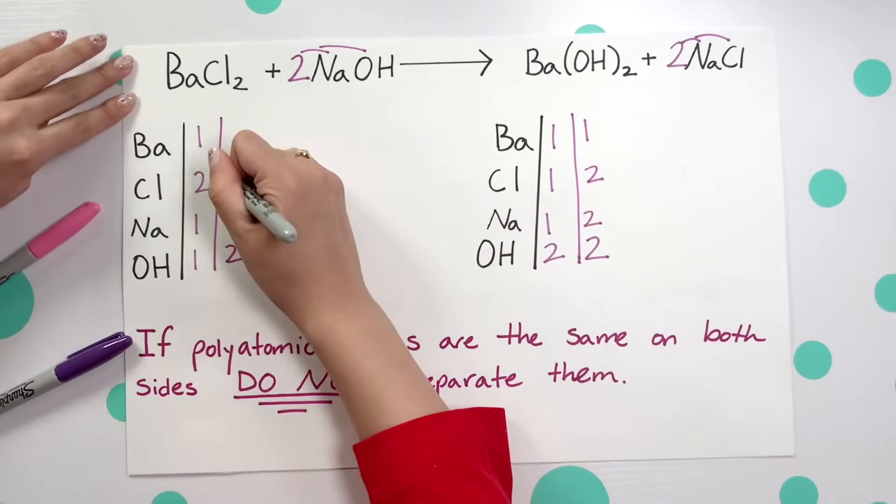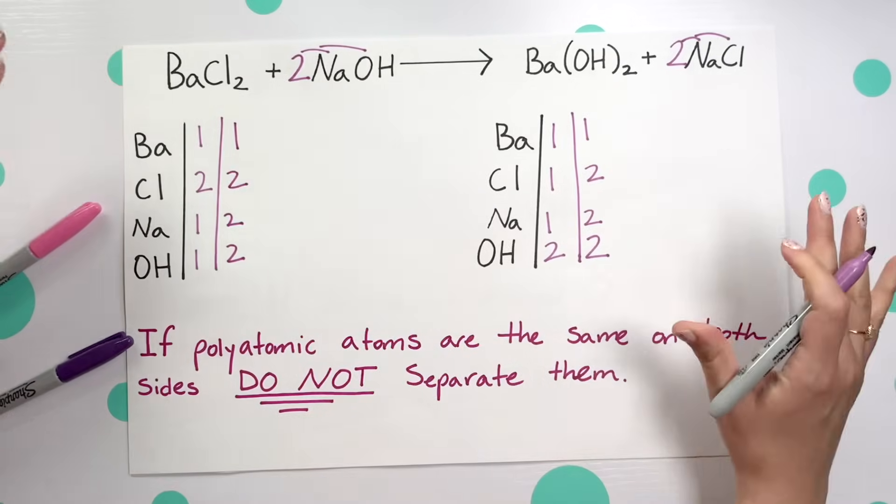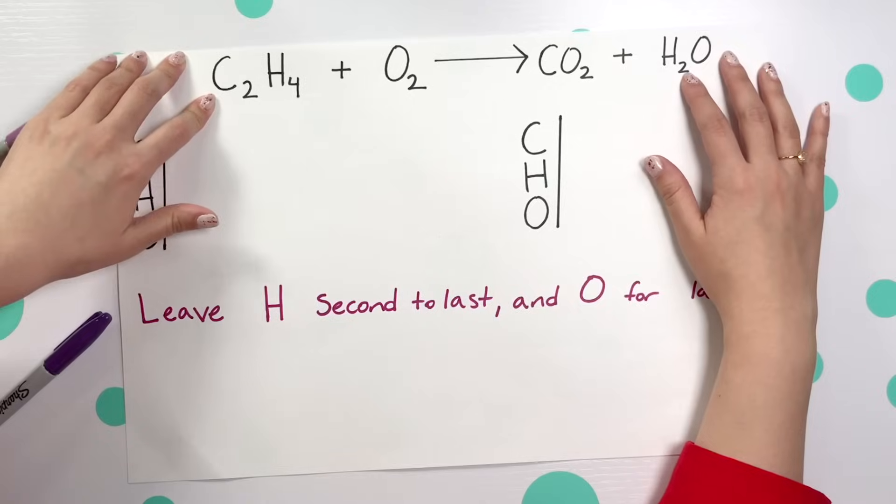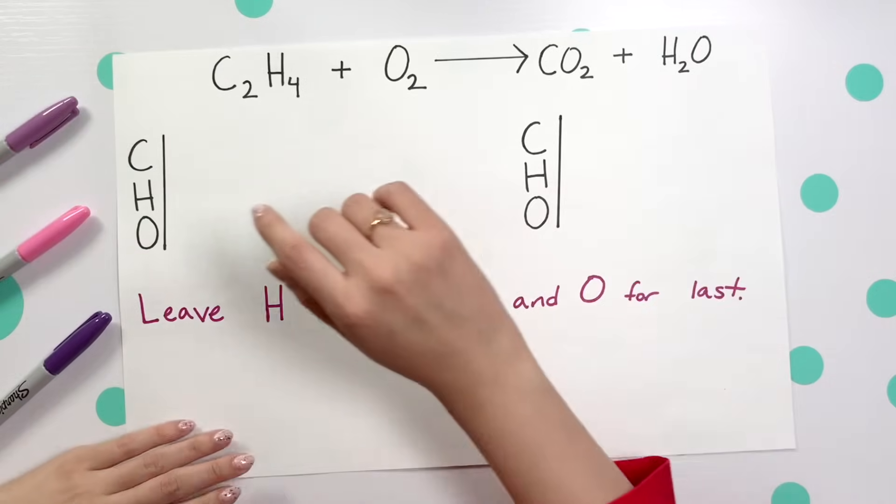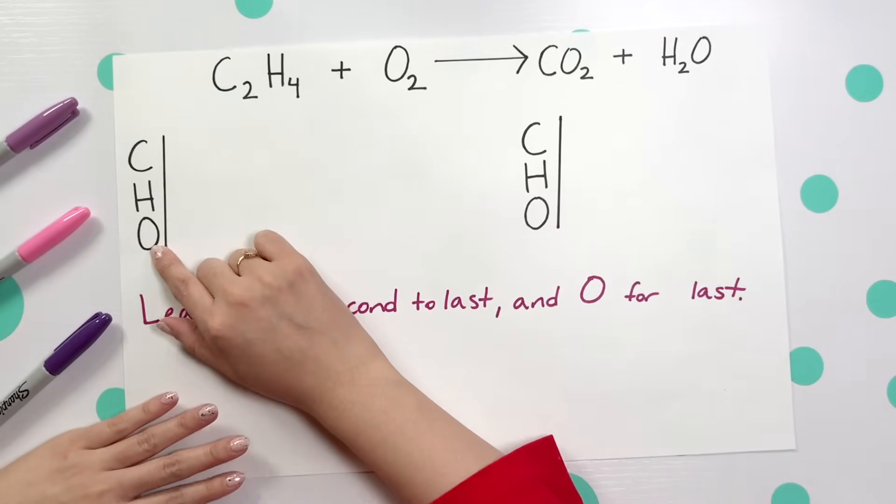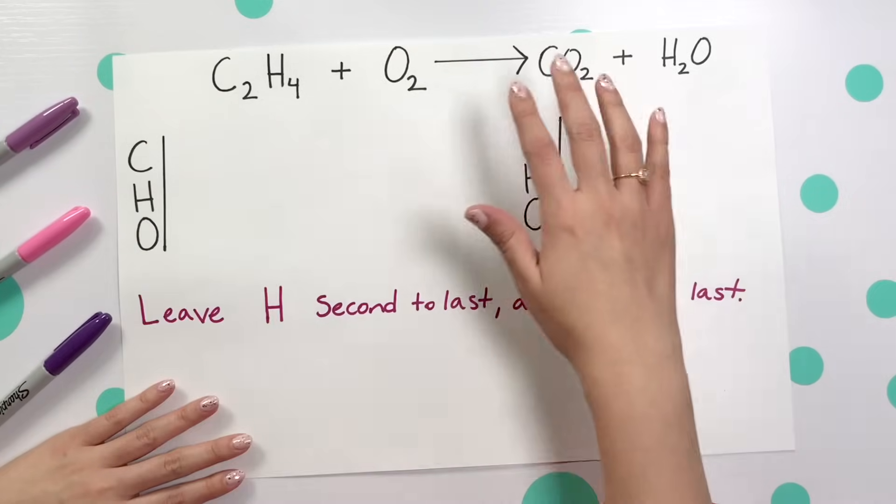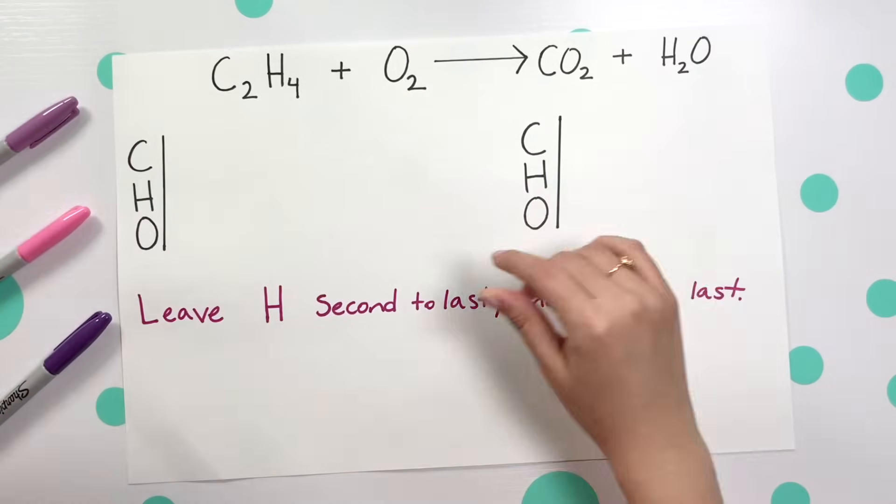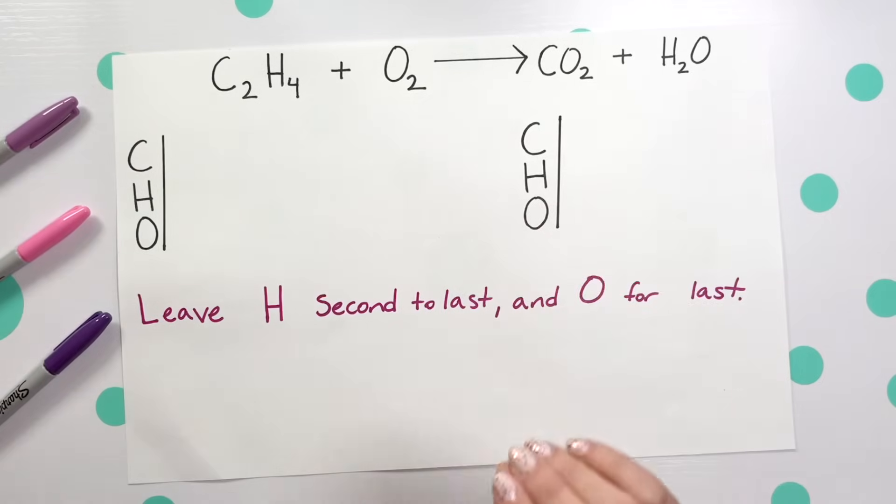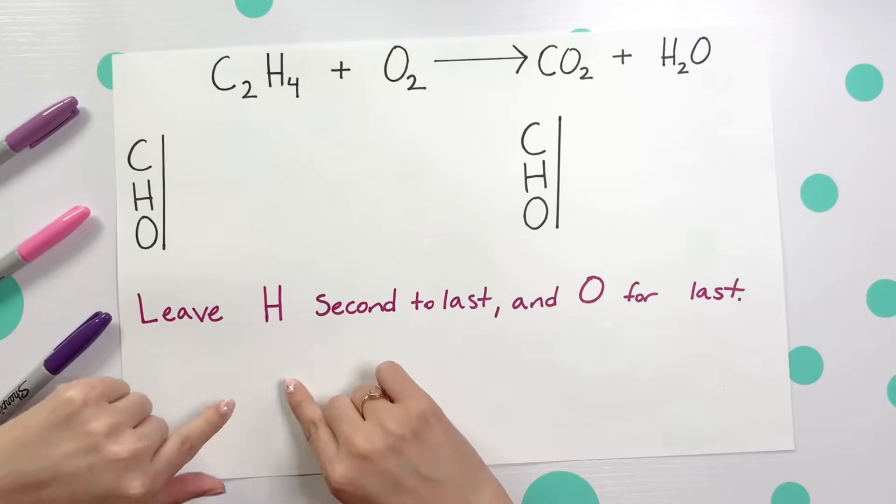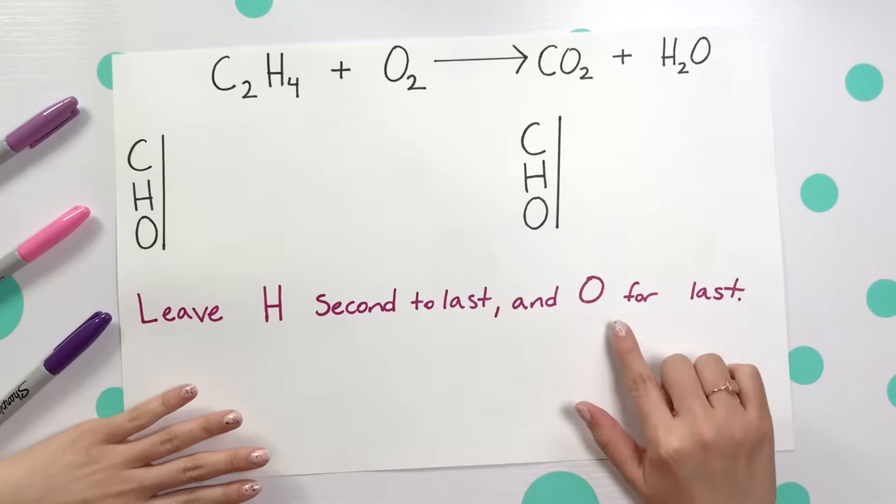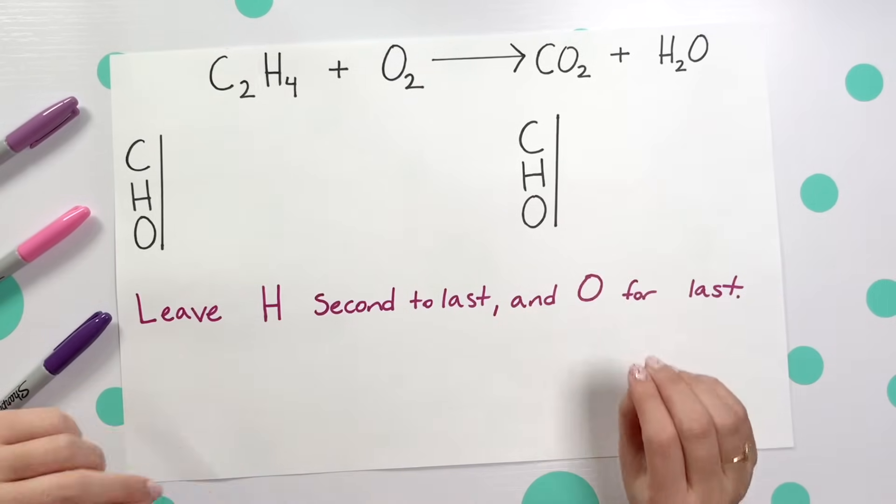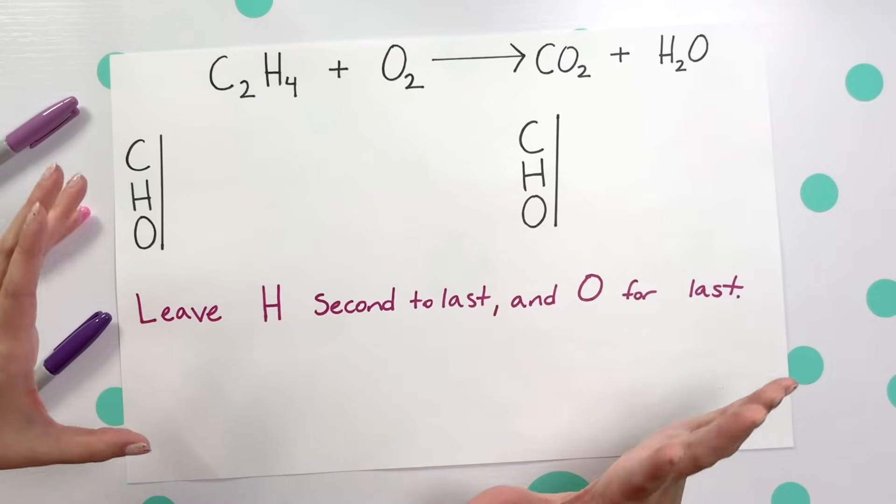Here we have our next unbalanced equation. Remember to start with writing all of the different elements you have for your reactant side and for your products, keeping that in the exact same order to help you balance it out. Now I'm always going to leave hydrogen for the second to last and oxygen for the very last. It makes it so much easier, oxygen tends to balance out at the very end.